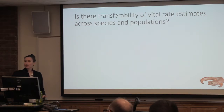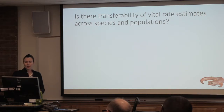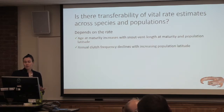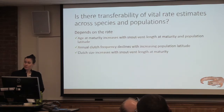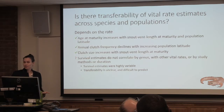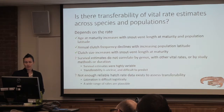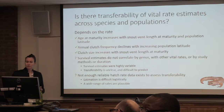So is there any transferability of vital rate estimates among species and populations? It depends on the rate. Age at maturity appears to increase with snout-vent length at maturity and with population latitude. Annual clutch frequency appears to decline with increasing population latitude. Clutch size appears to increase with body size. But survival doesn't really correlate by genus with other vital rates or by study methods or duration. Survival estimates were highly variable, so transferability is really unclear. Similarly, there's not enough reliable hatch rate data to assess transferability.